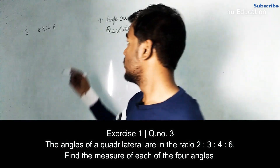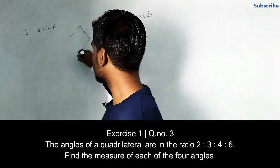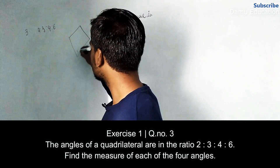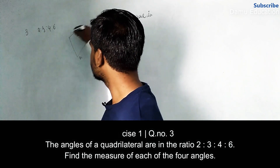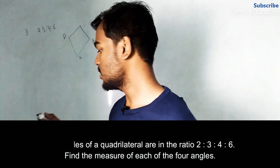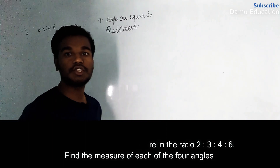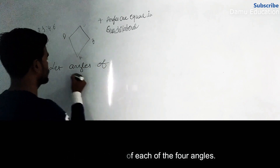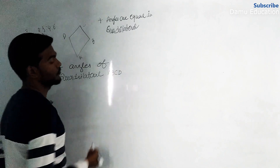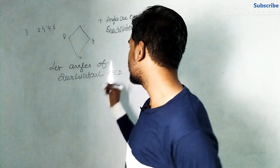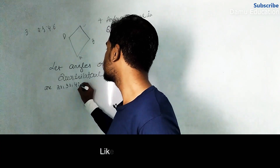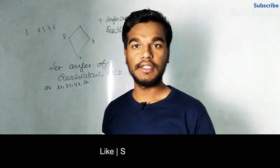Let's draw a quadrilateral — something like this. It's not a kite, it's not a rhombus. Let's label it A, B, C, D. Now let the angles of quadrilateral ABCD be 2x, 3x, 4x, and 6x.